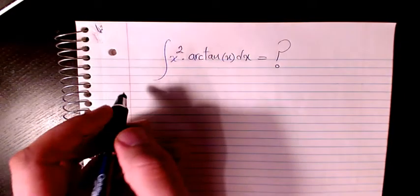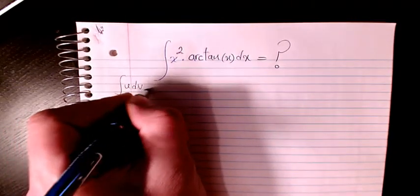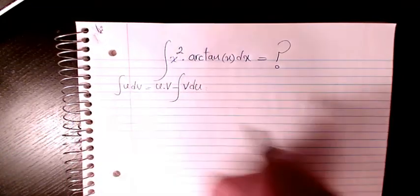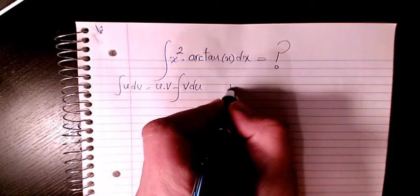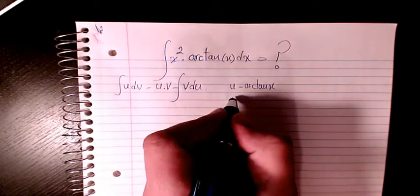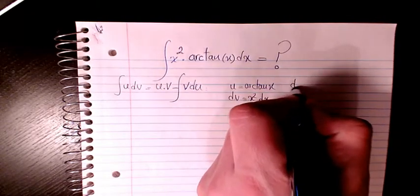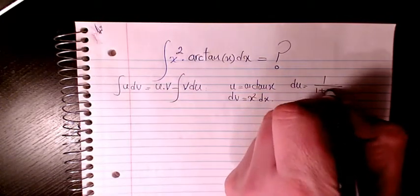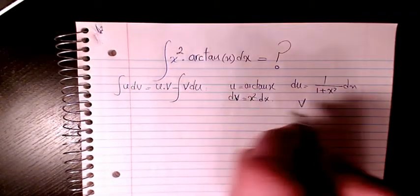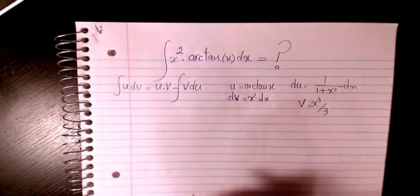The first thing I need to do is use integration by parts. Integration by parts is: u dv equals u times v minus the integration of v du. So u is arctan(x) and dv is x squared dx. Then du will be 1 over (1 plus x squared) dx, and v would be the integration of x squared, which is x cubed divided by 3.